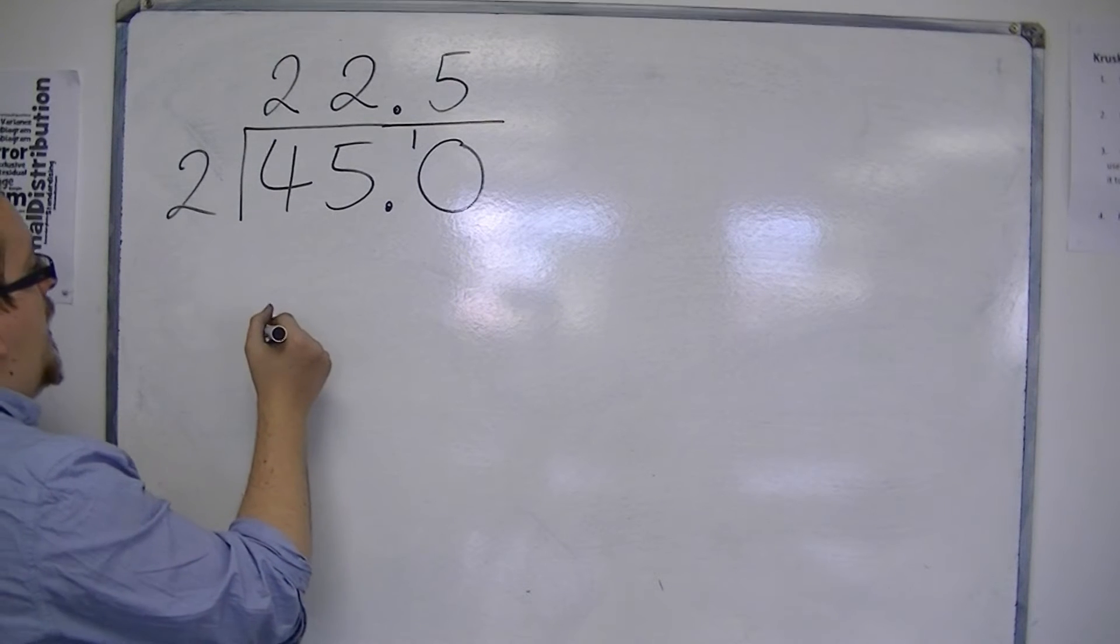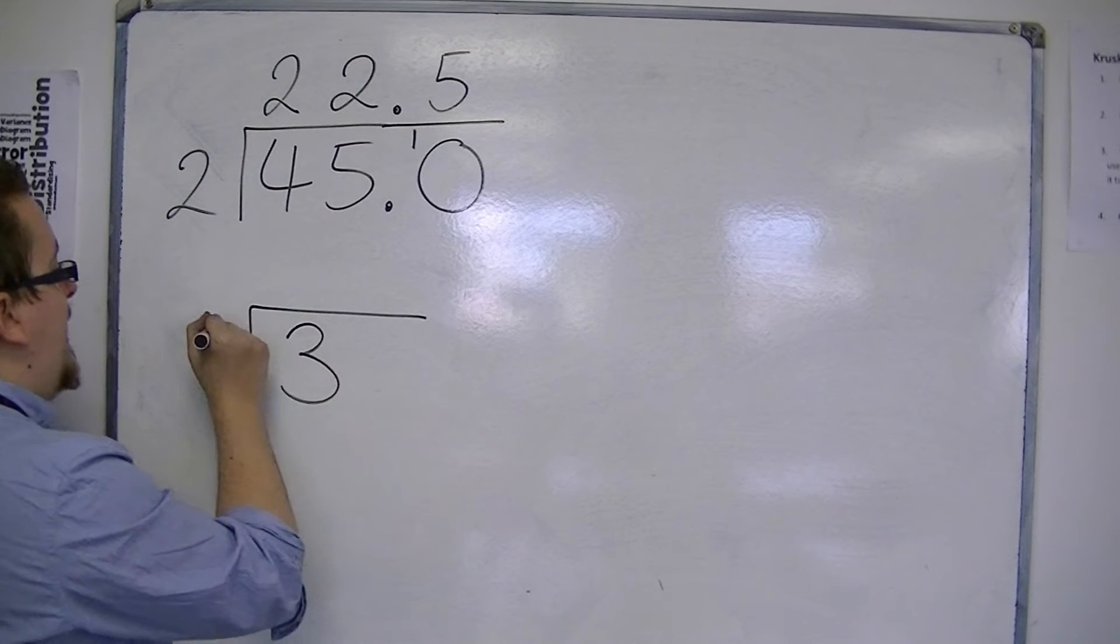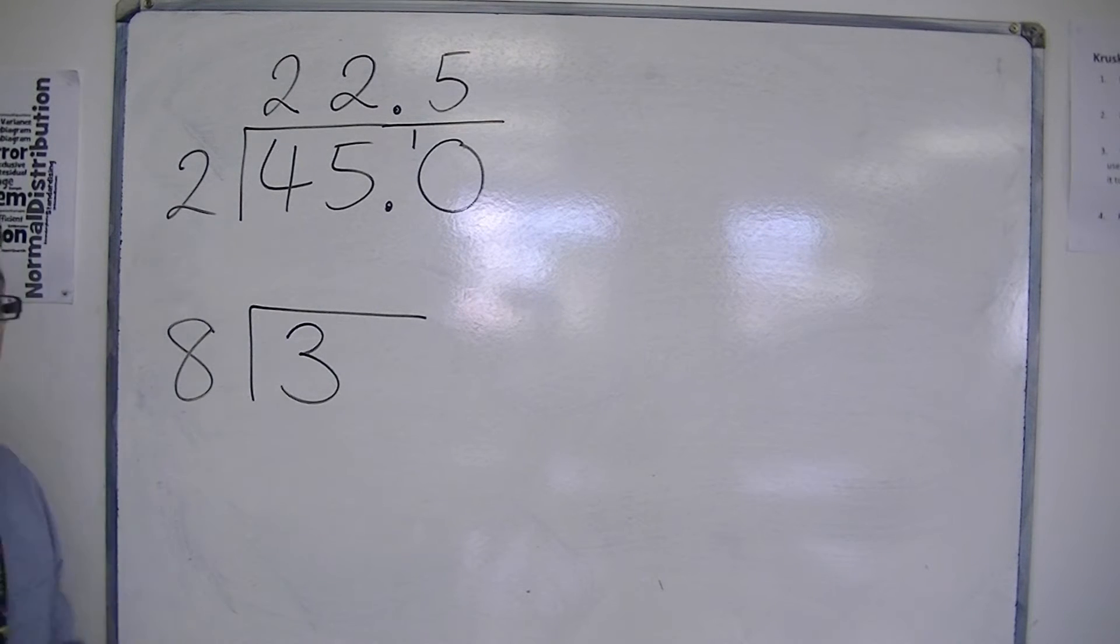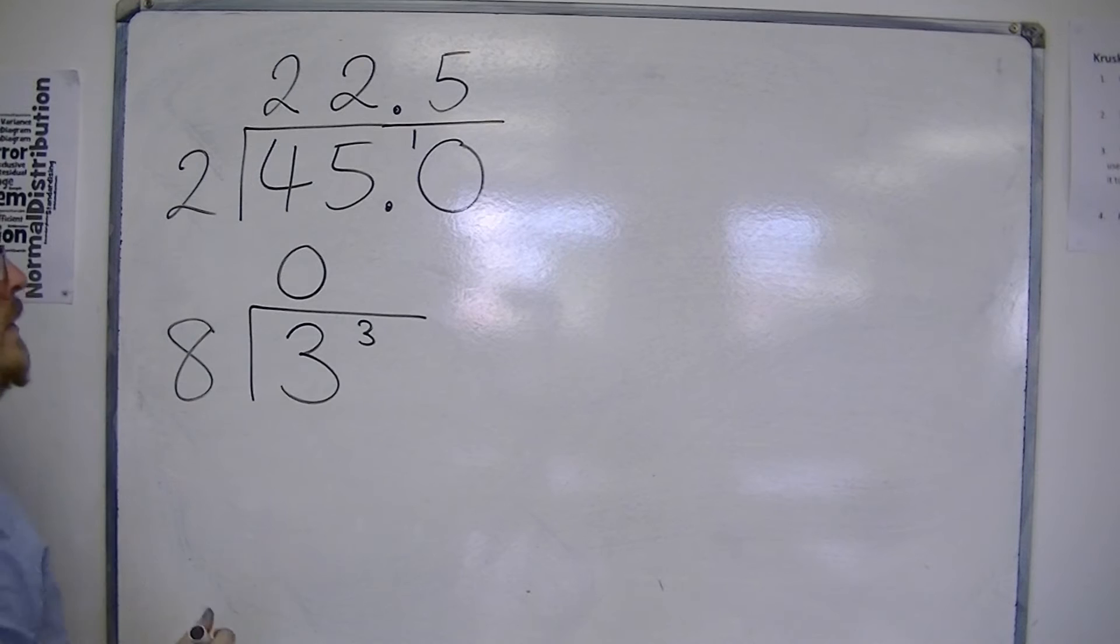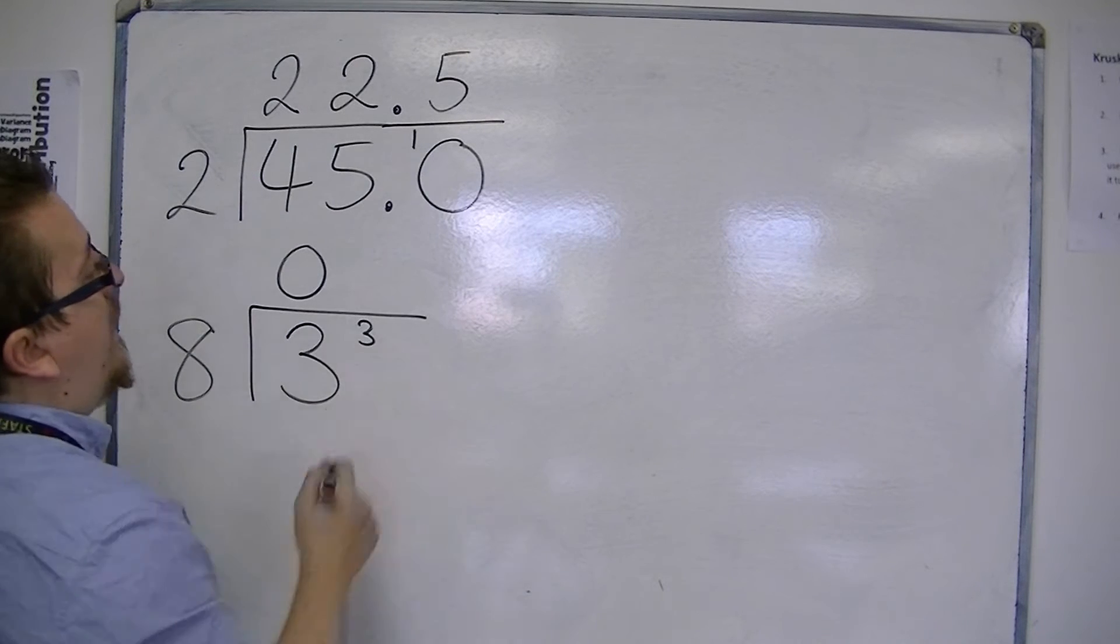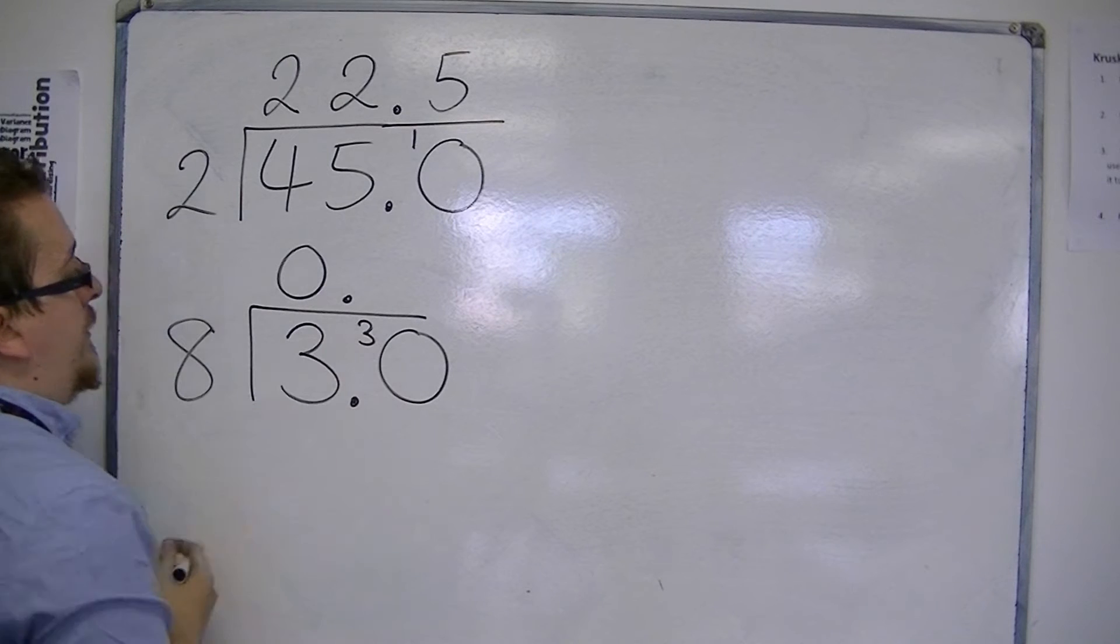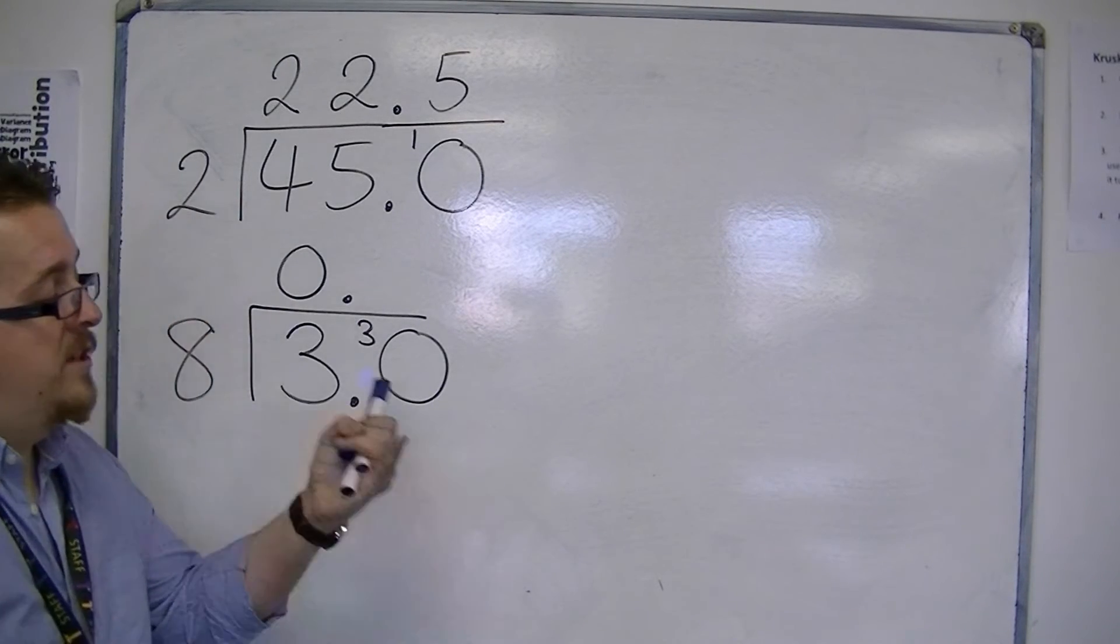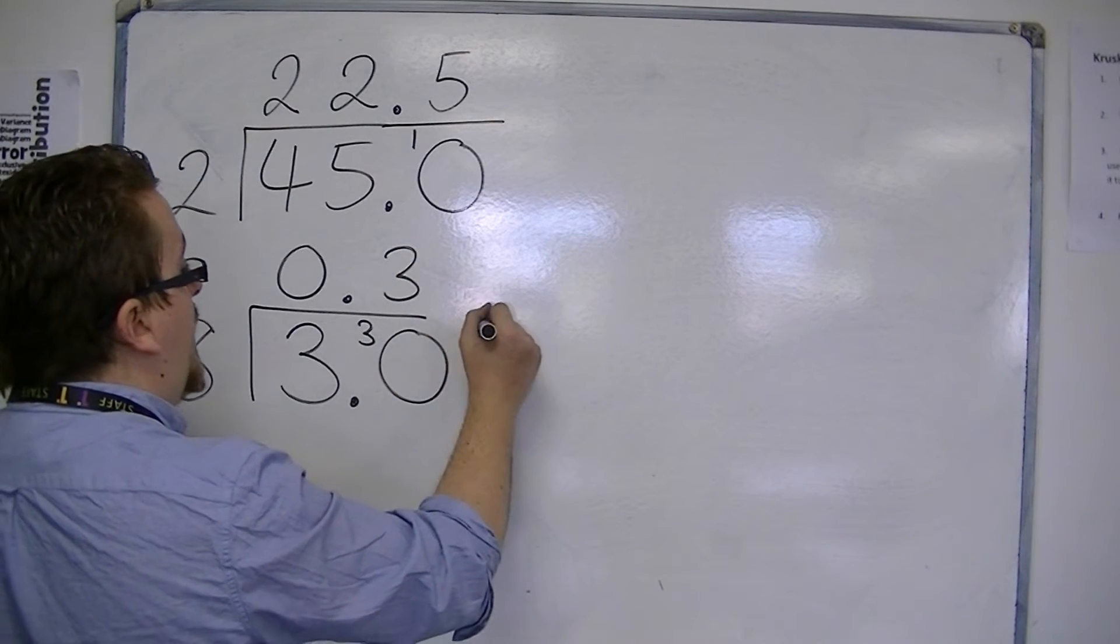If you had, let's say, 3 divided by 8, then this causes another problem. 8s into 3 go 0 with 3 left over. So we have this 3 hanging, much like we had that 1. So we put in a 0 and decimal points. 8s into 30 go 8, 16, 24, so 3 times with 6 left over.